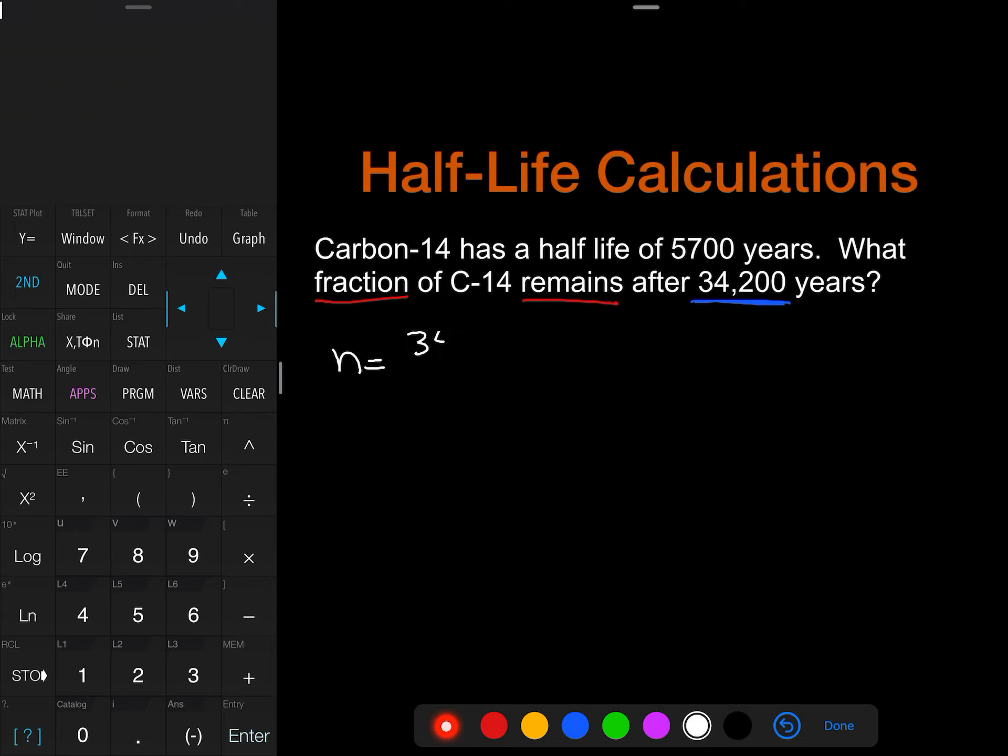So n equals 34,200. We're going to divide that by 5,700. So 34,200 divided by 5,700 and we get a value of 6, 6 half-lives.